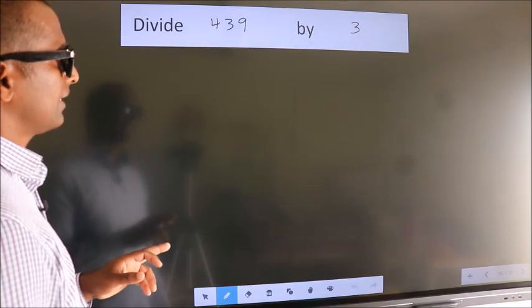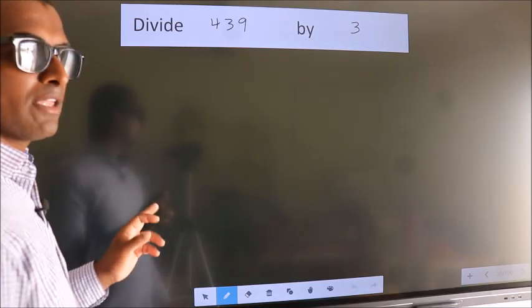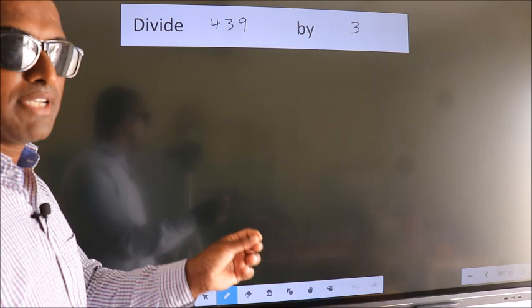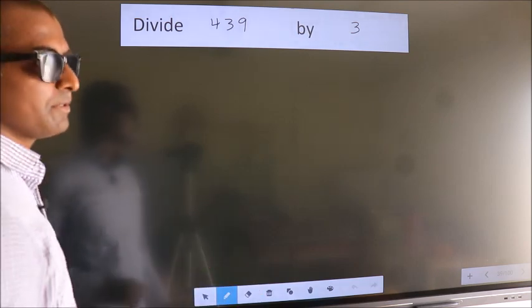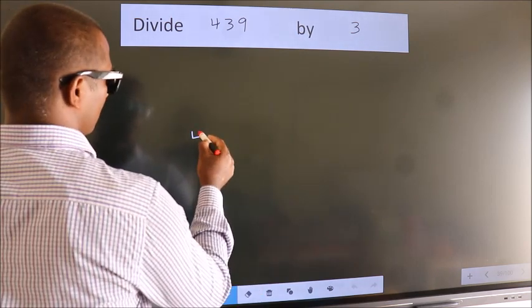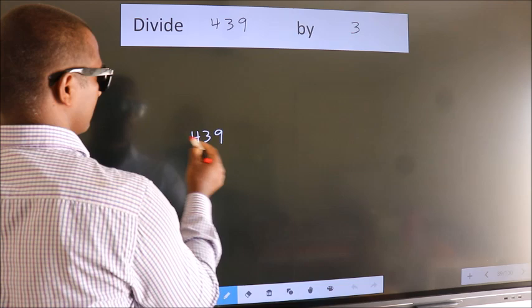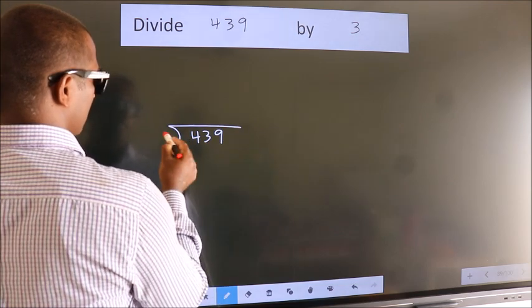Divide 439 by 3. To do this division, we should frame it in this way. 439 here, 3 here.